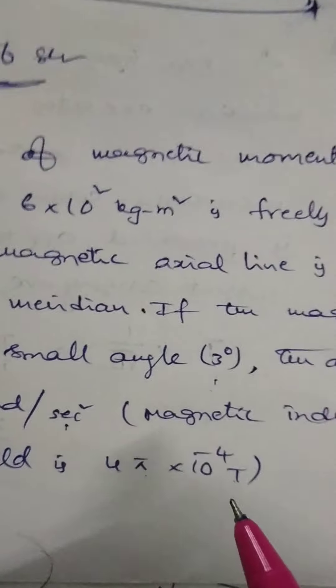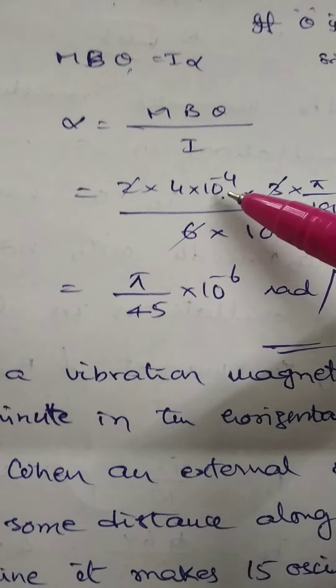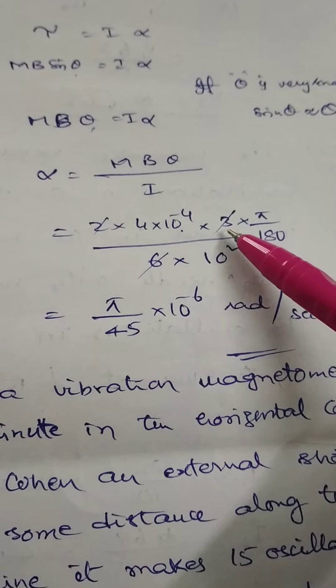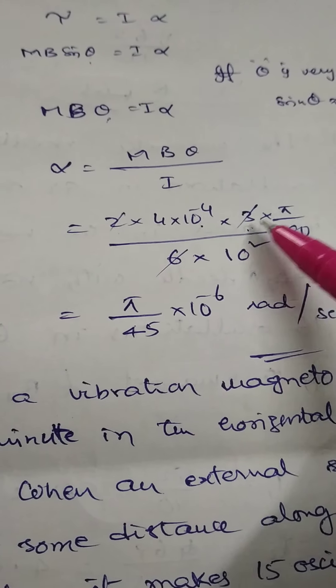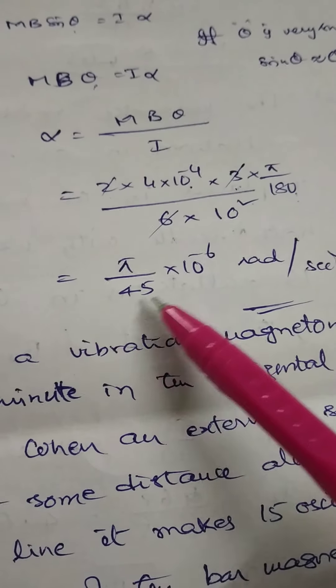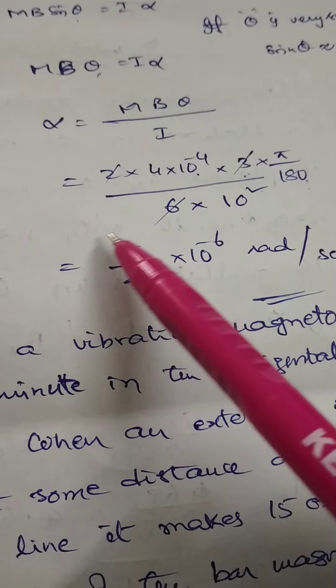The magnetic induction field of Earth's magnetic field is only 4×10⁻⁴ tesla, so B is replaced by 4×10⁻⁴. Theta is equal to 3 degrees, and degrees must be represented in radians: 1 degree equals π/180 radians. So 3 degrees equals 3×π/180. Solving, the answer is π/45×10⁻⁶ radians per second squared. So the required answer is π/45.